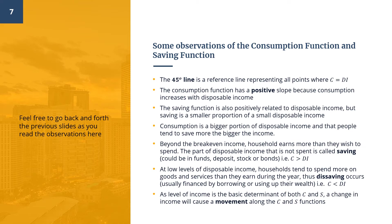The part of disposable income that is not spent is called saving. At low levels of disposable income, households tend to spend more on goods and services than they earn during the year — thus dissaving occurs. Since income level is the basic determinant of both consumption and saving, a change in income will cause a movement along the consumption and saving functions.